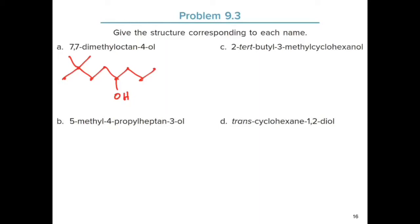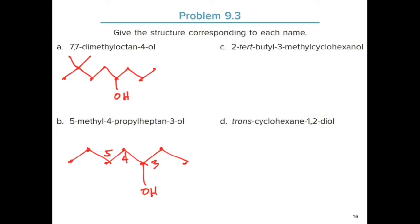For 5-methyl-4-propylheptan-3-ol, we have a heptane base with 7 carbon atoms. The hydroxy group is on the third carbon. On the fourth carbon there's a propyl group (3 carbons), and on the fifth carbon there's a methyl group. That is the structure for 5-methyl-4-propylheptan-3-ol.